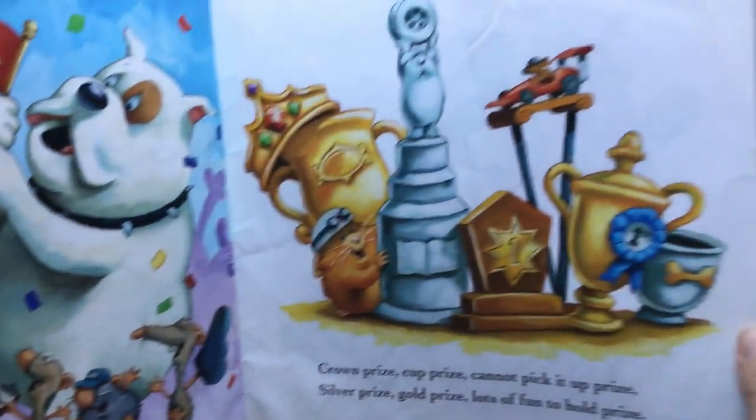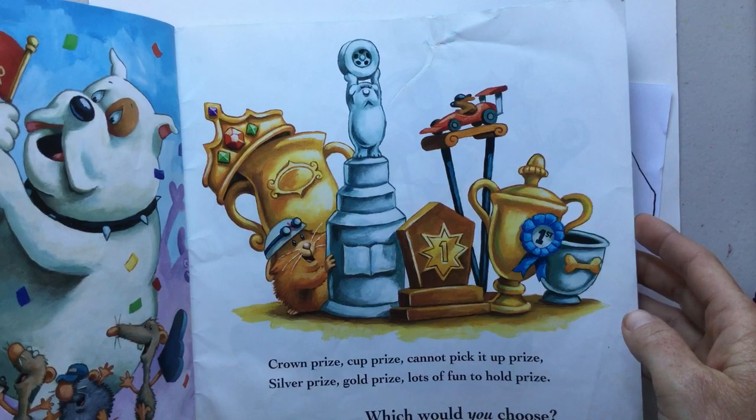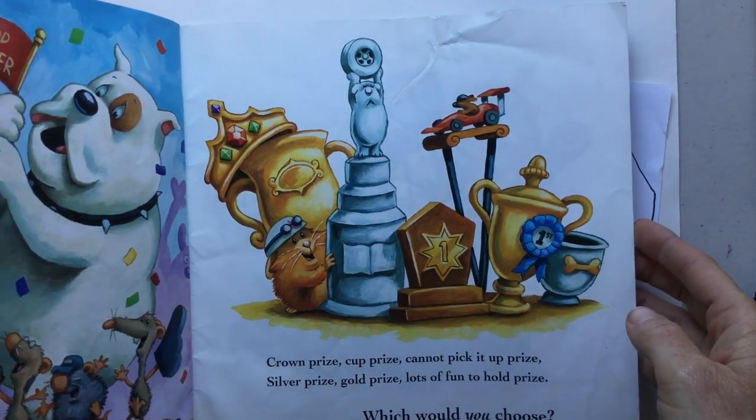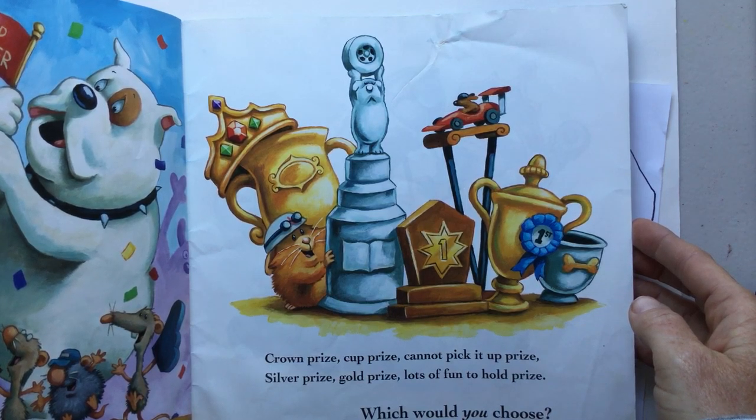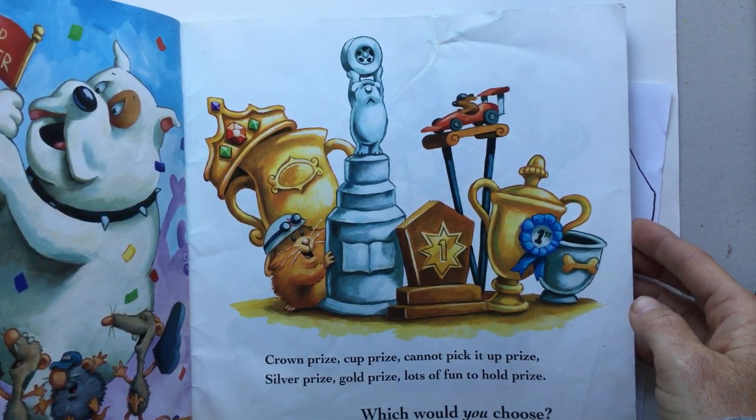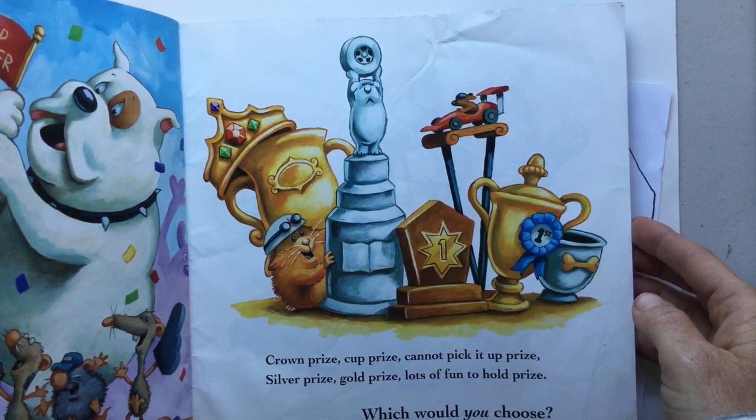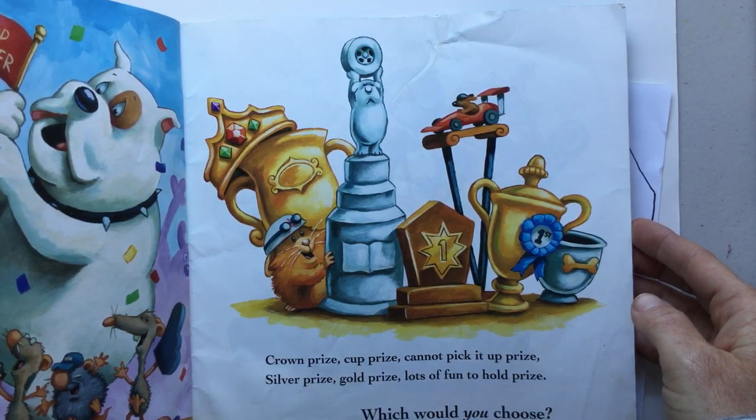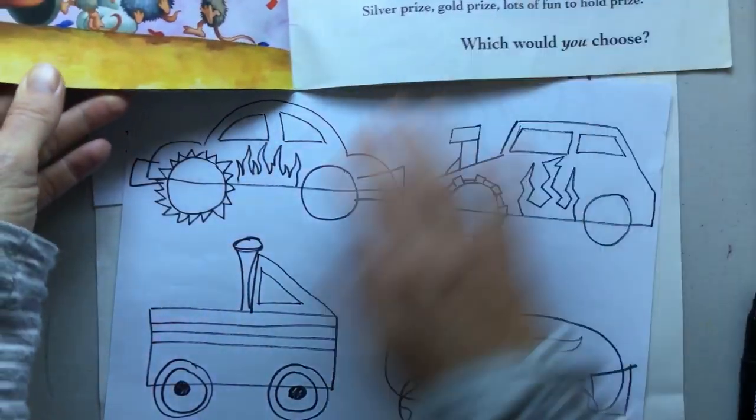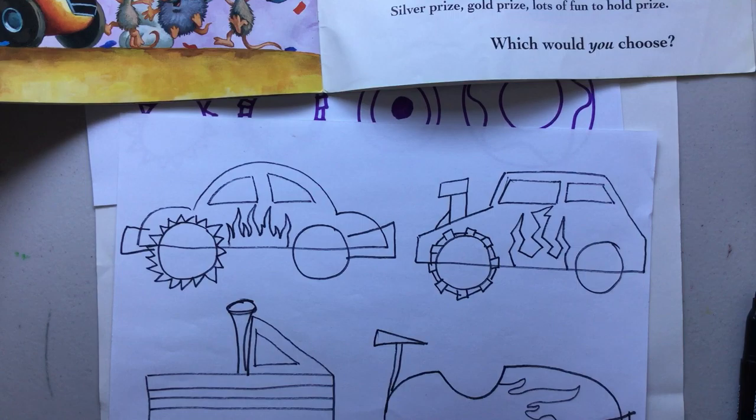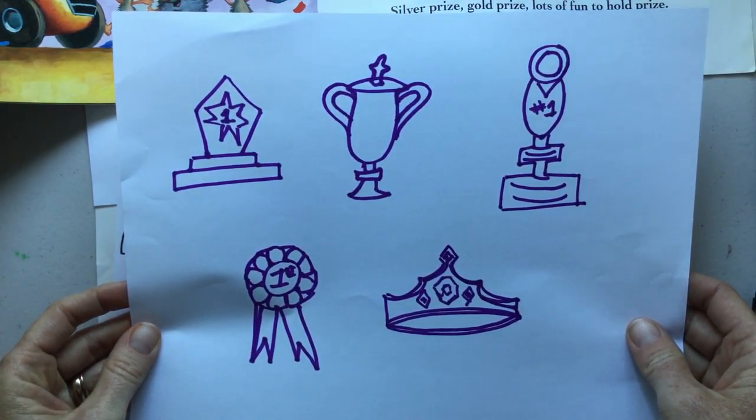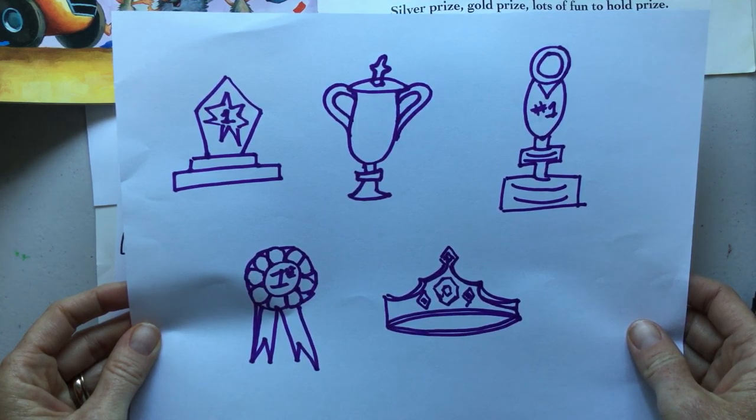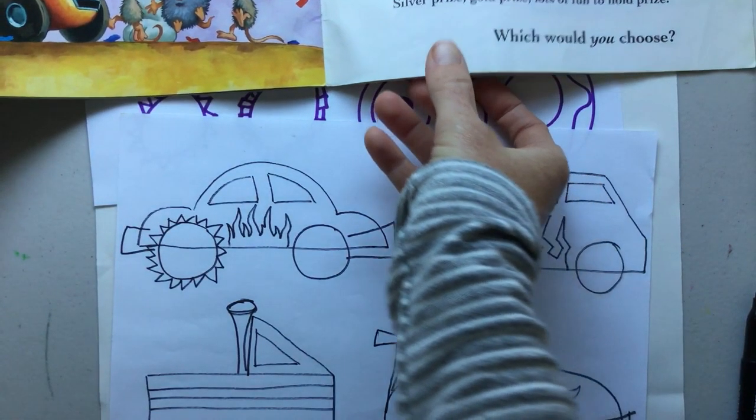Crown prize, cup prize, cannot pick it up prize. Silver prize, gold prize, and lots of fun to hold prize. Which would you choose? Look at all of these choices that Hot Rod Hamster could choose from for winning the race. So now on the hood of your car you could also add a trophy. I made a few here just as examples like they had in the book. You can pause it if you'd like to.